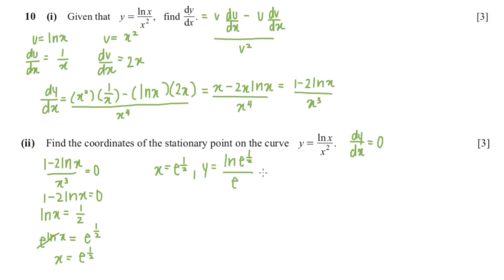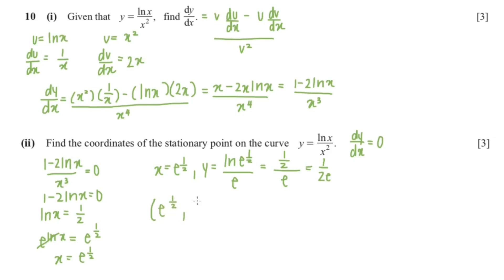Since ln and exponential cancel out, that gives 1/2 over e, which is 1/(2e). So our coordinates are (e^(1/2), 1/(2e)).